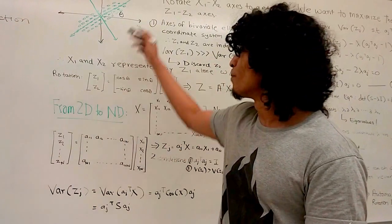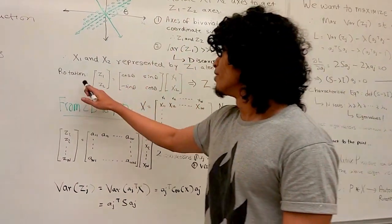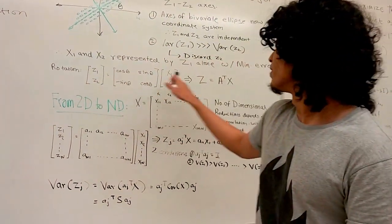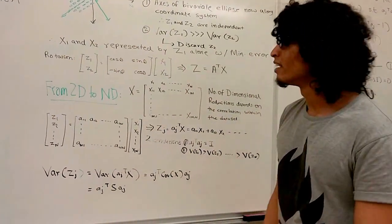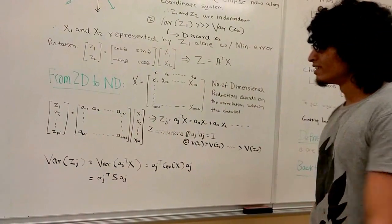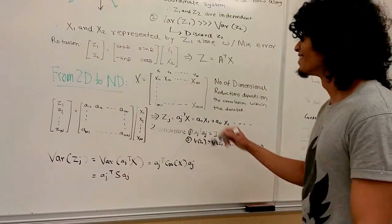From a geometric point of view, z1, z2 and x1, x2 are related by the transpose of a rotation matrix. And that was for two dimensions. Let's move to n dimensions. It's a lot easier than it sounds.